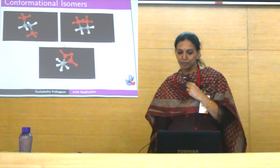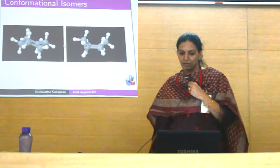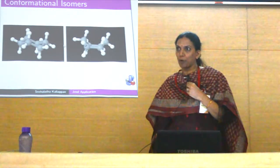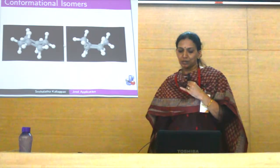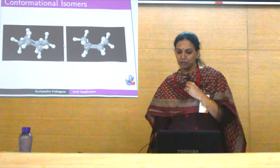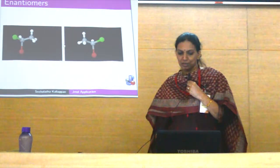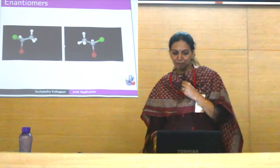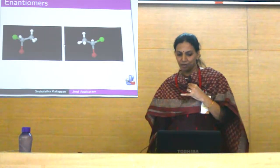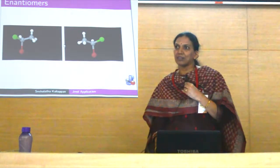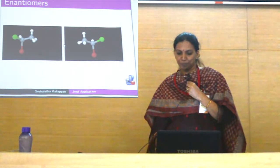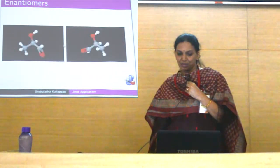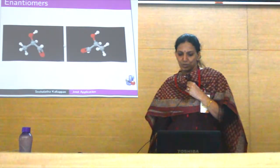I have shown here cyclohexane conformations. This example is in the chair and boat form. You can show the axial and equatorial substituents. These are very clearly visualized, like any chiral carbon in the stereo centre.